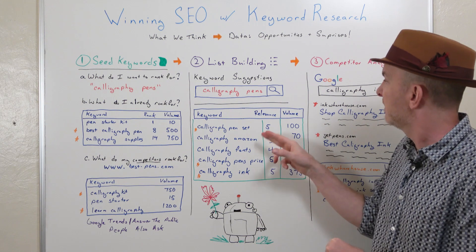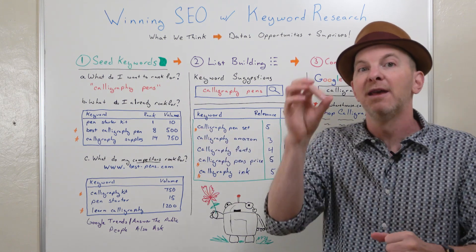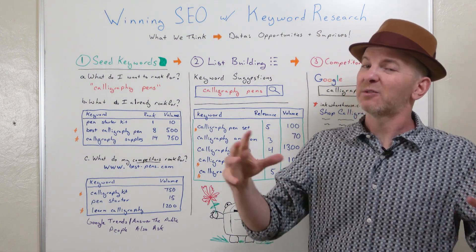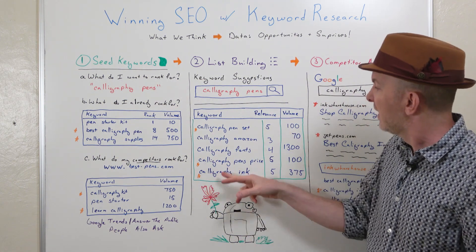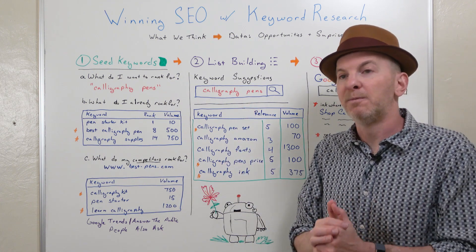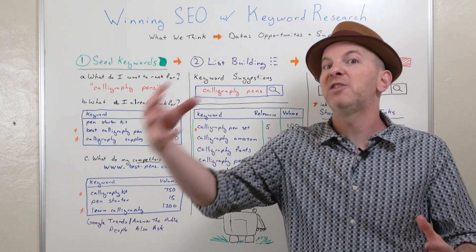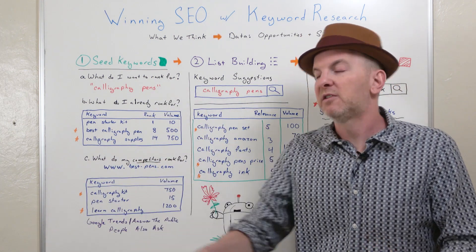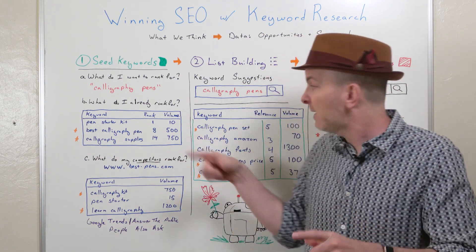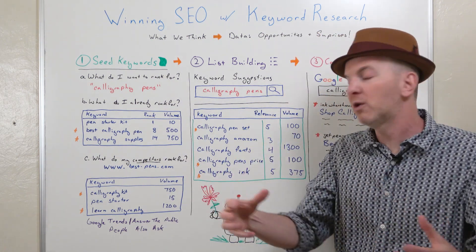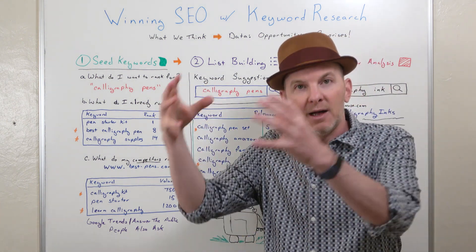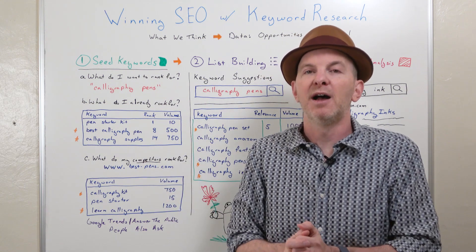So 'calligraphy pen set' — highly relevant, a five out of five relevance score, volume of 100. We're going to mark that; that becomes a new seed. 'Calligraphy Amazon' — that only has a three relevance score. Unless you're Amazon, that's probably not the most relevant keyword; we're going to cross it off the list. 'Calligraphy fonts,' 'calligraphy pens price' — oh, that's great. 'Calligraphy ink' — great with high volume. What we've done now is collected more seeds, and we're going to throw those seeds back in and discover even more related keywords, more seeds, and start building out our list. Every time we find a new seed, it can become a new page of your site or a new entire content section — a section on calligraphy ink, a page on price. We group these in our spreadsheets together, and every time we find a new seed it can become a new topic, a new page, a new idea.